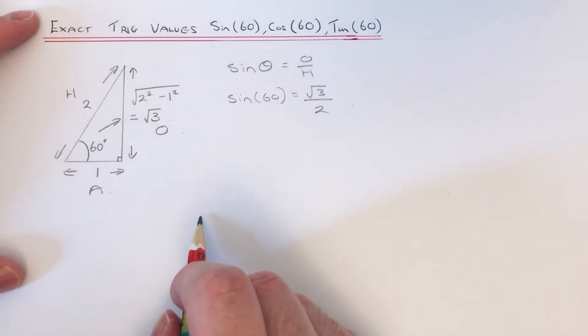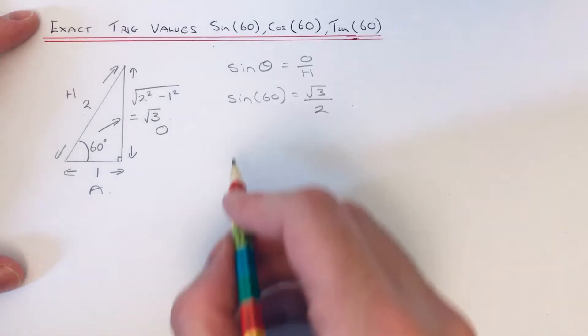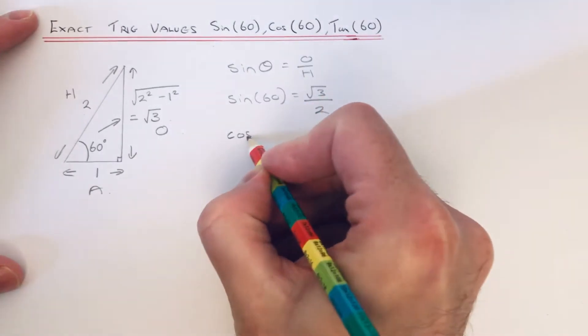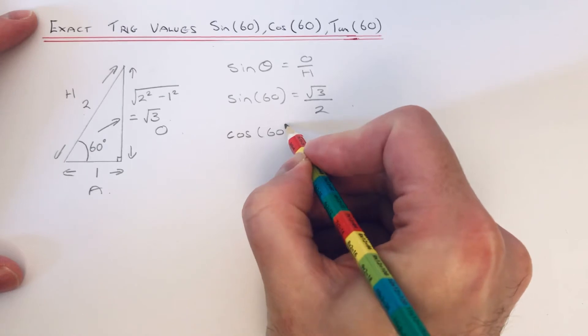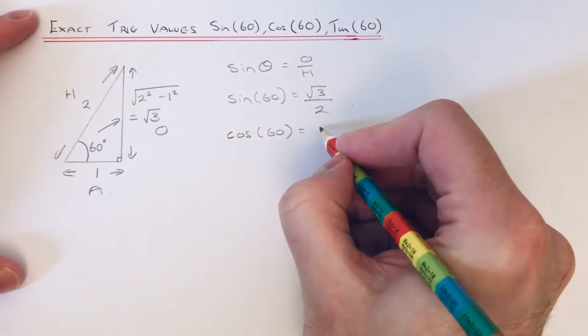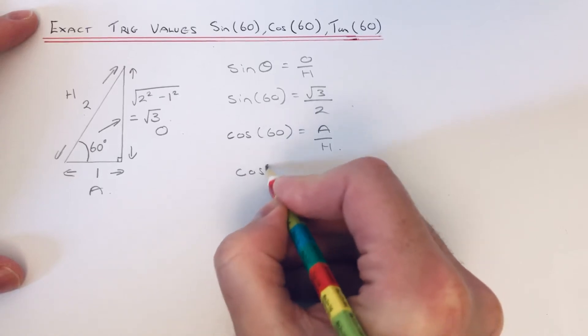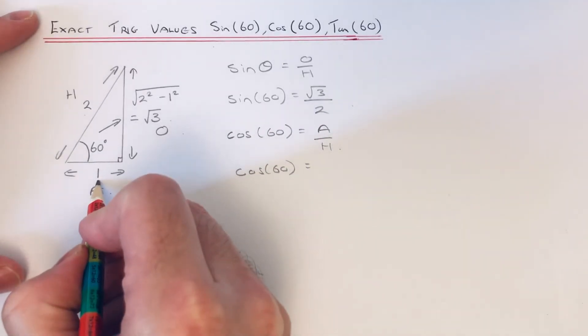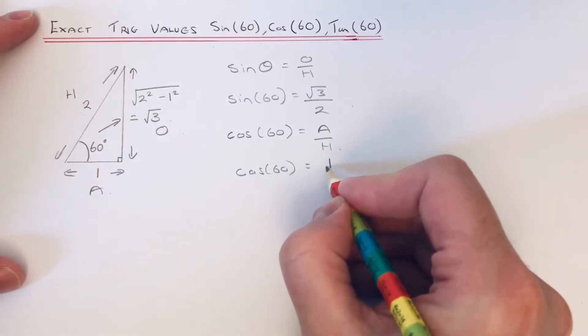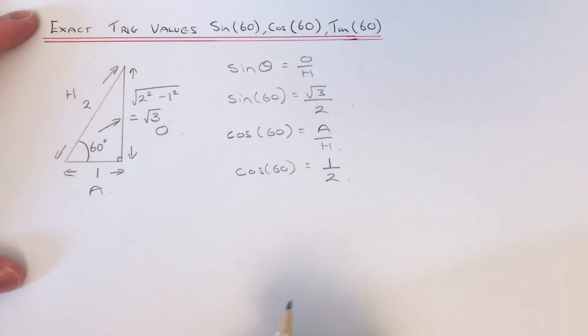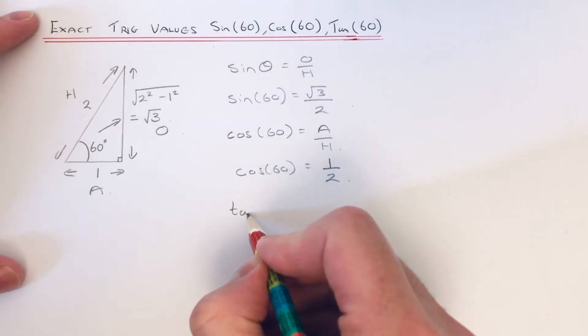Let's do cos 60 then next. Cos is adjacent over hypotenuse, so our adjacent is 1 and our hypotenuse is 2, so we get 1 half.